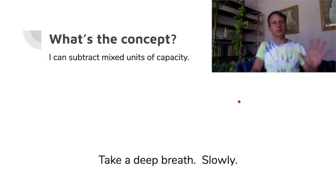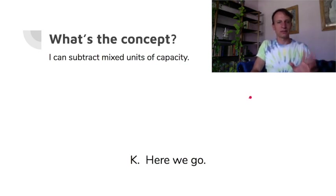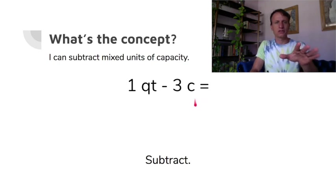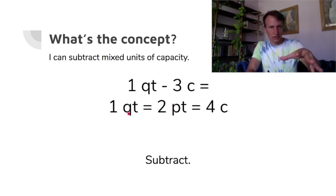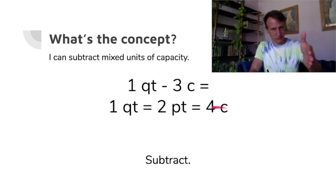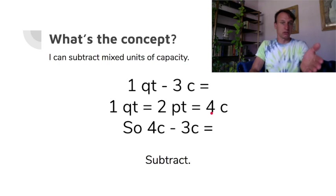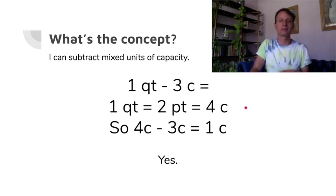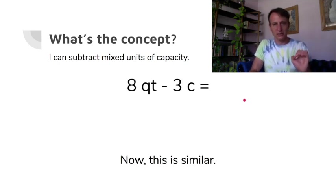Starting with something simple: one quart minus three cups. Notice we're doing a unit hop — pints come between quarts and cups. So decompose the quart: one quart is two pints, which is four cups. Now it's easy: four cups minus three cups — that's straightforward. All you have to do is do the conversion first, and then the subtraction is easy. The difference is one cup.